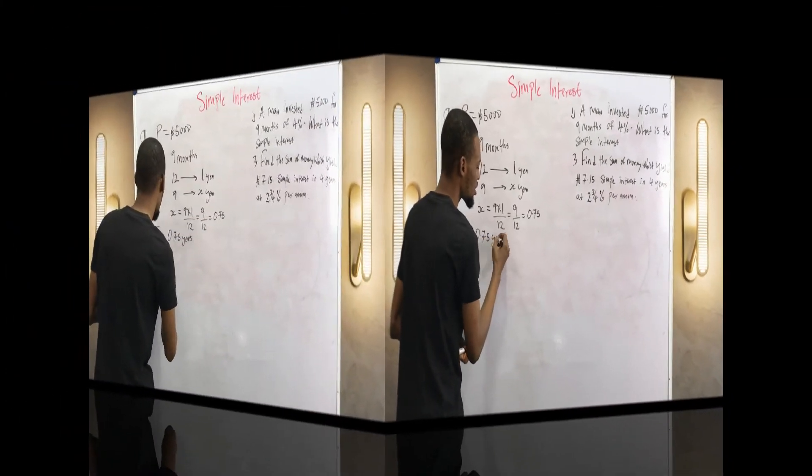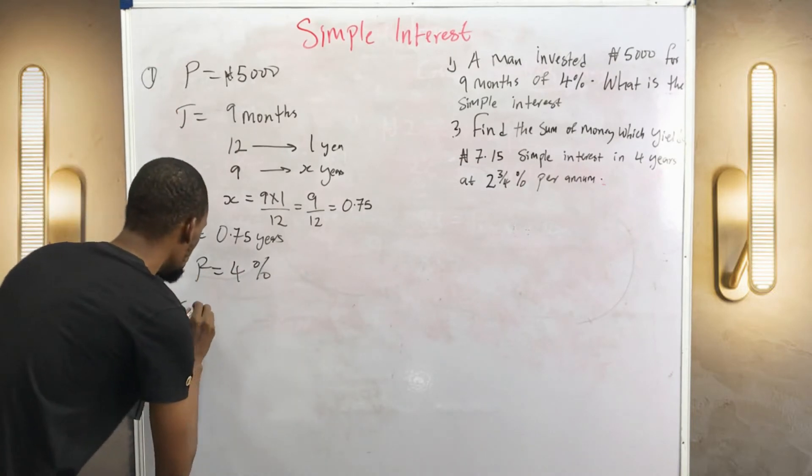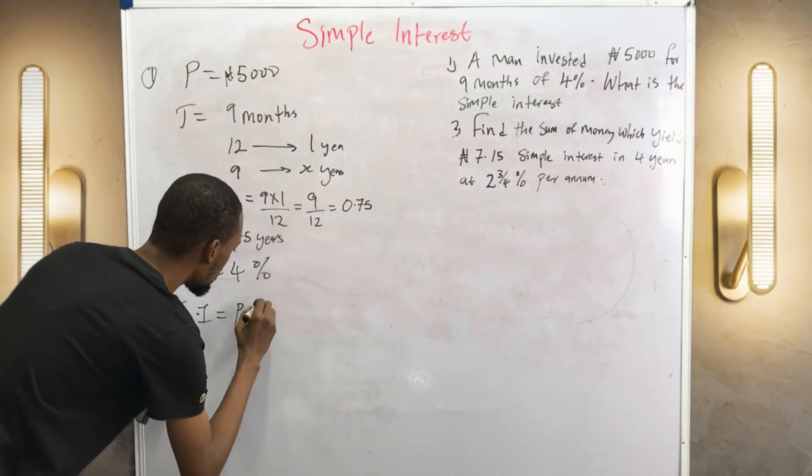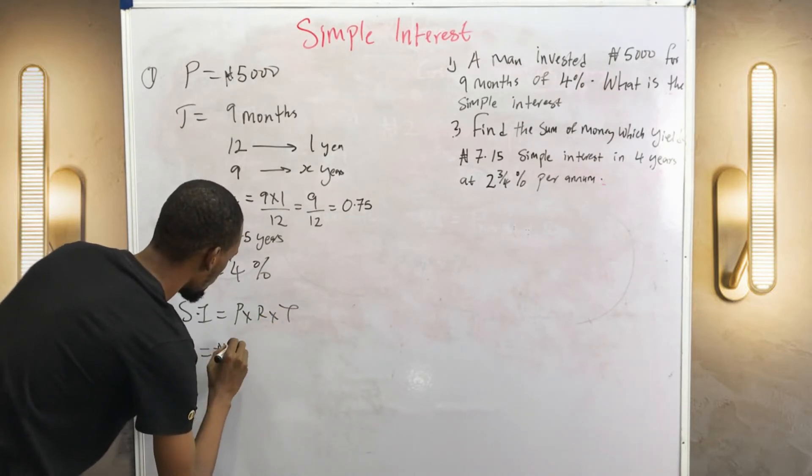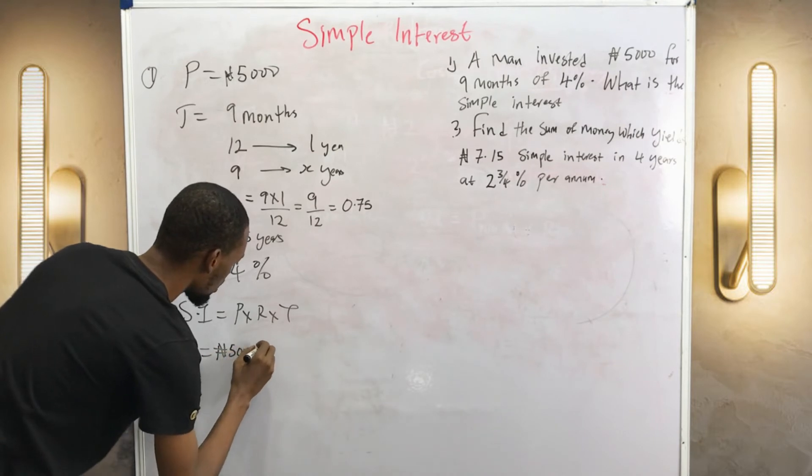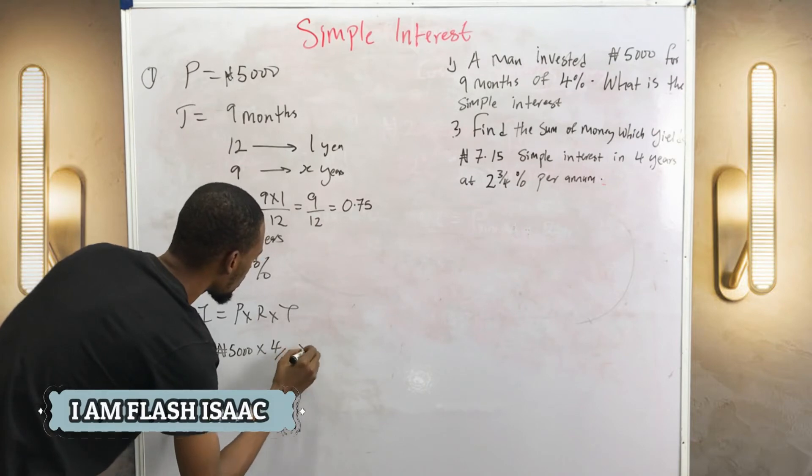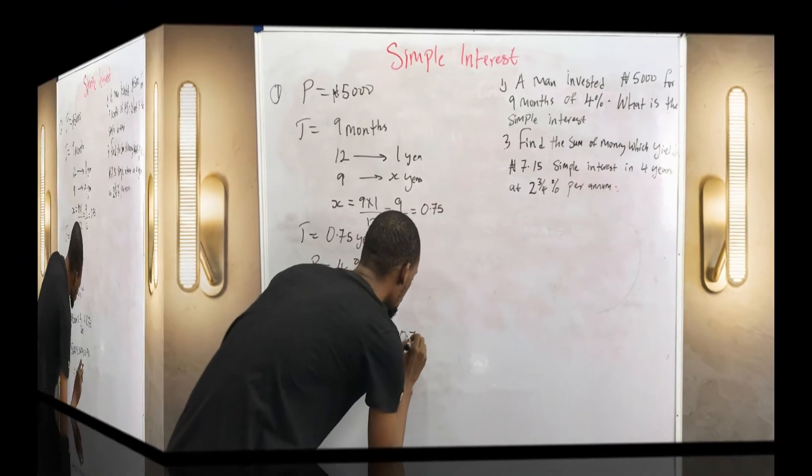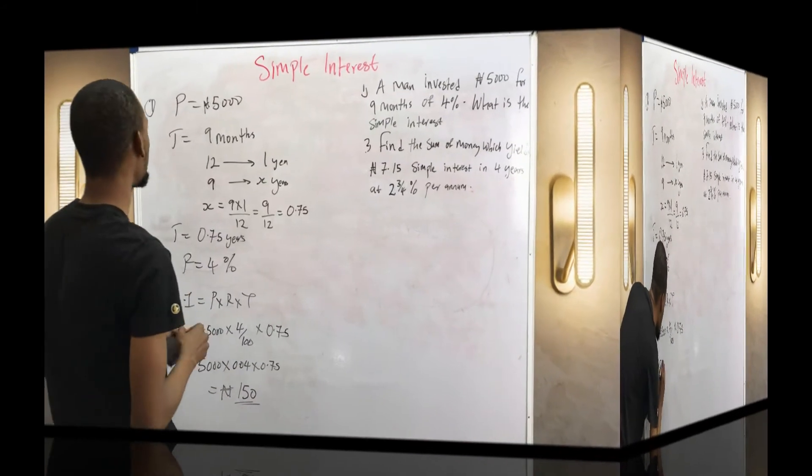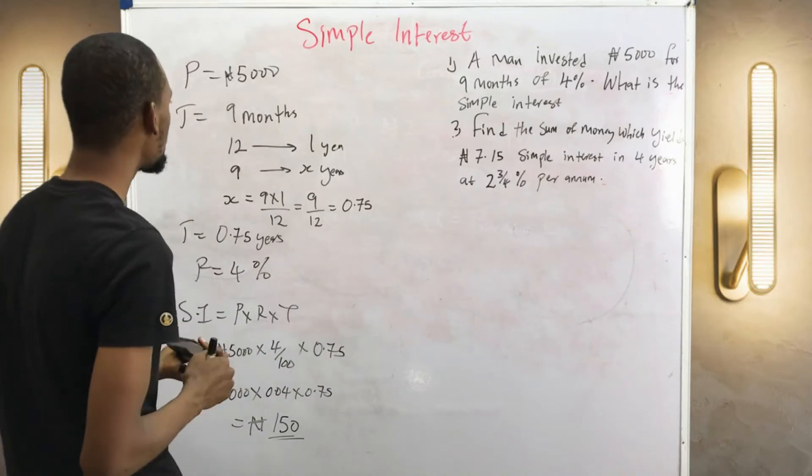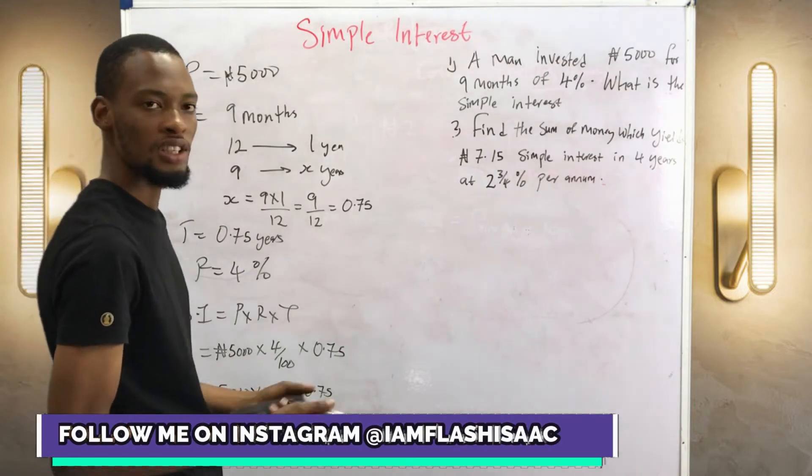R equals four percent. Therefore simple interest equals P times R times T, which is P is 5,000 times R, four percent, four over hundred, times time 0.75. That's the simple interest. The interest being paid at the end of nine months is 150 naira. Simple, right?